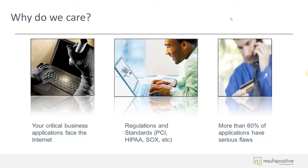Secondly, there are regulations and standards in place today that make it very difficult for organizations to keep up. Examples include PCI DSS, HIPAA compliance, and Sarbanes-Oxley. PCI is going to be a focal point of today's demo — we're going to look at a SaaS product that must adhere to highly regulated credit reporting agency standards from Experian and TransUnion.